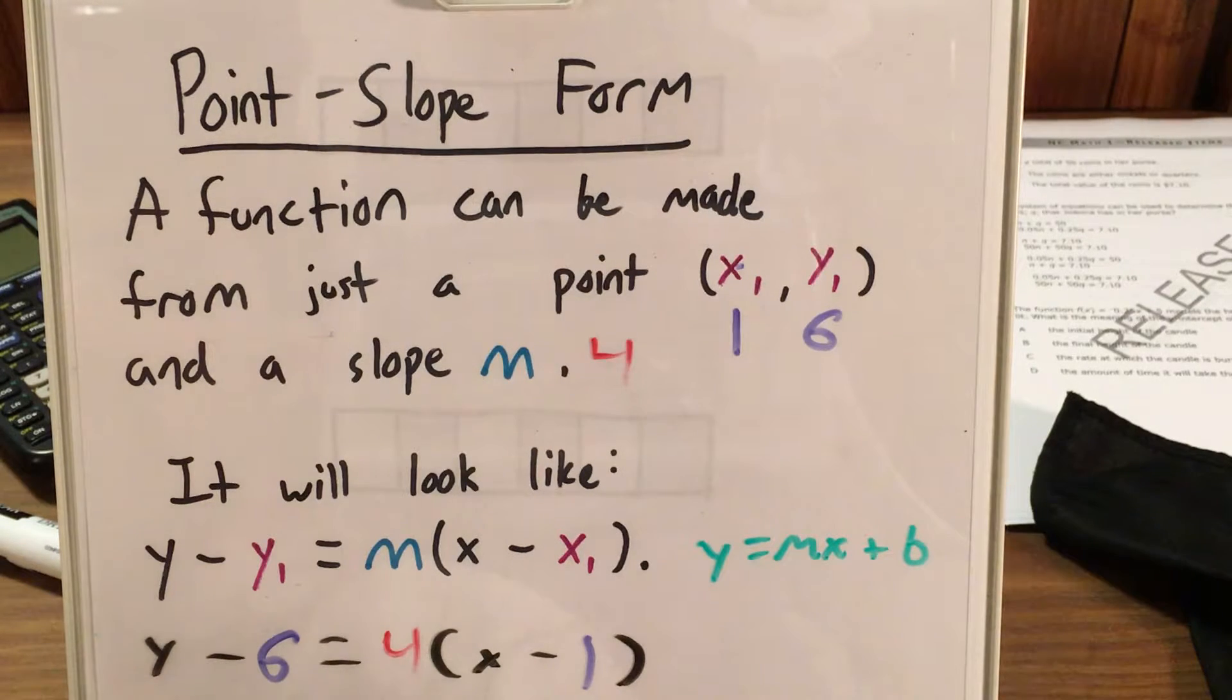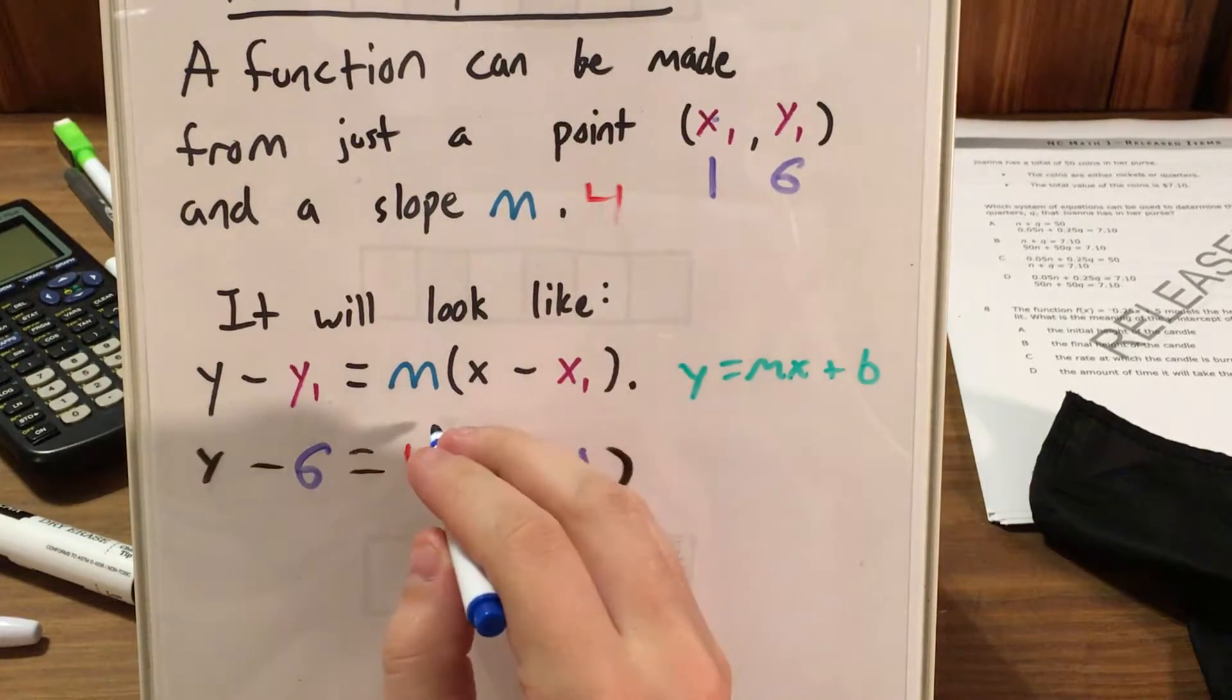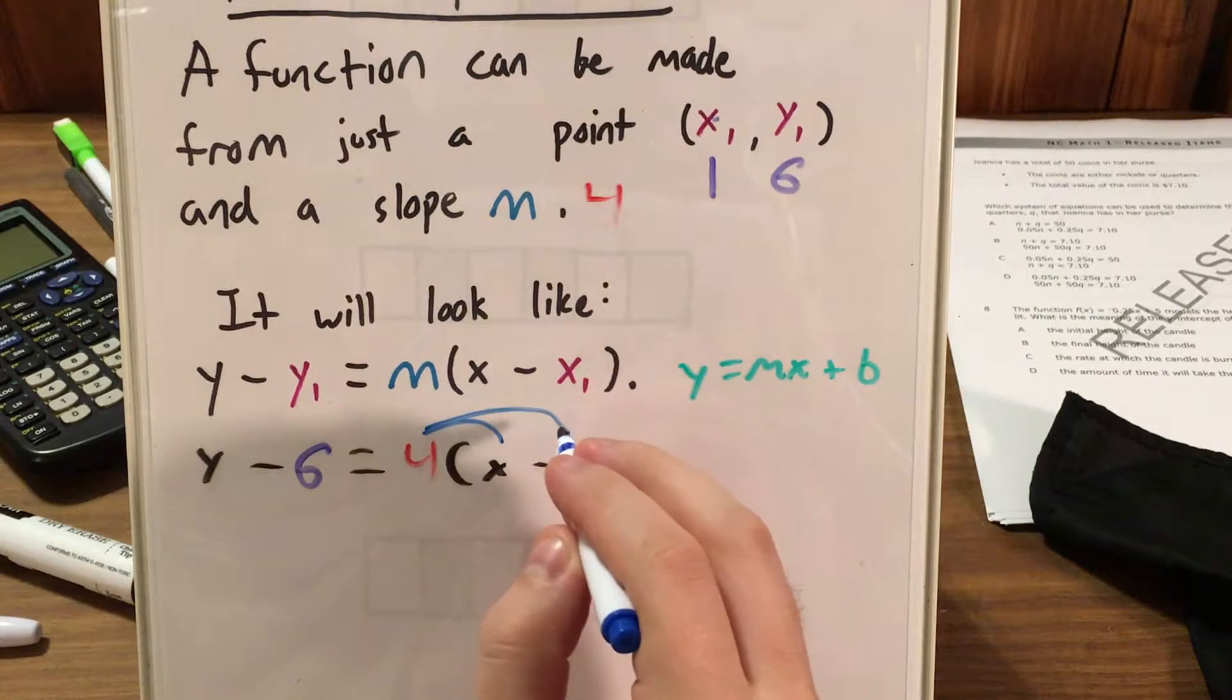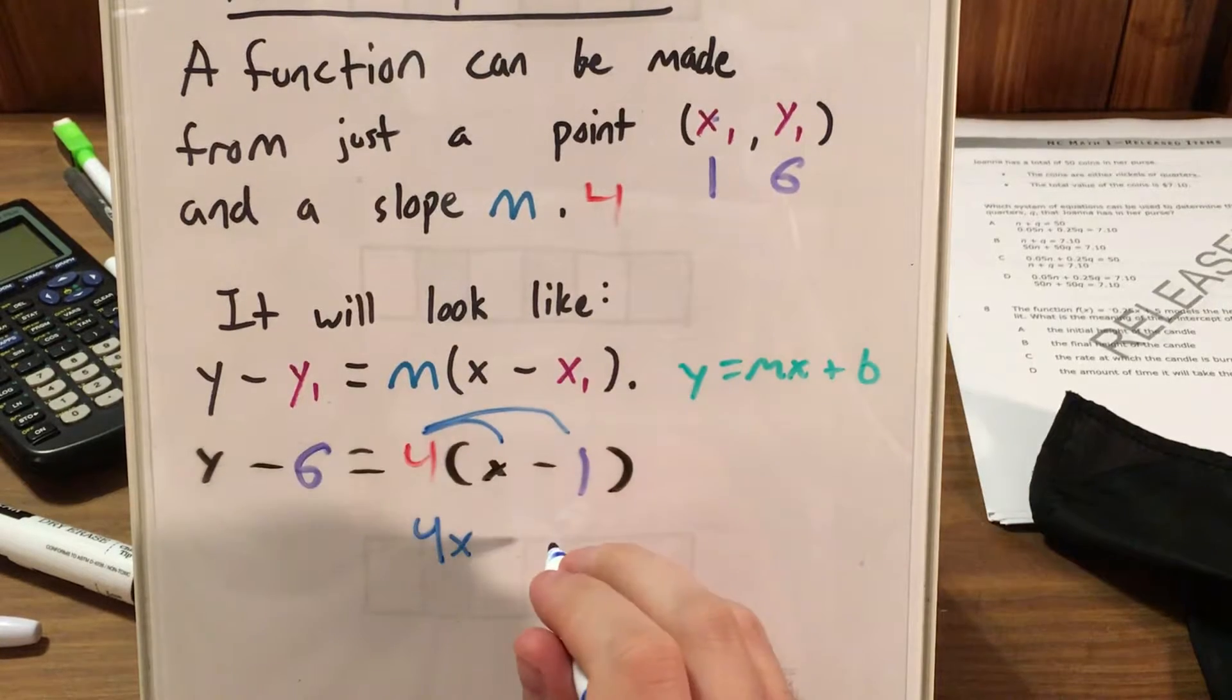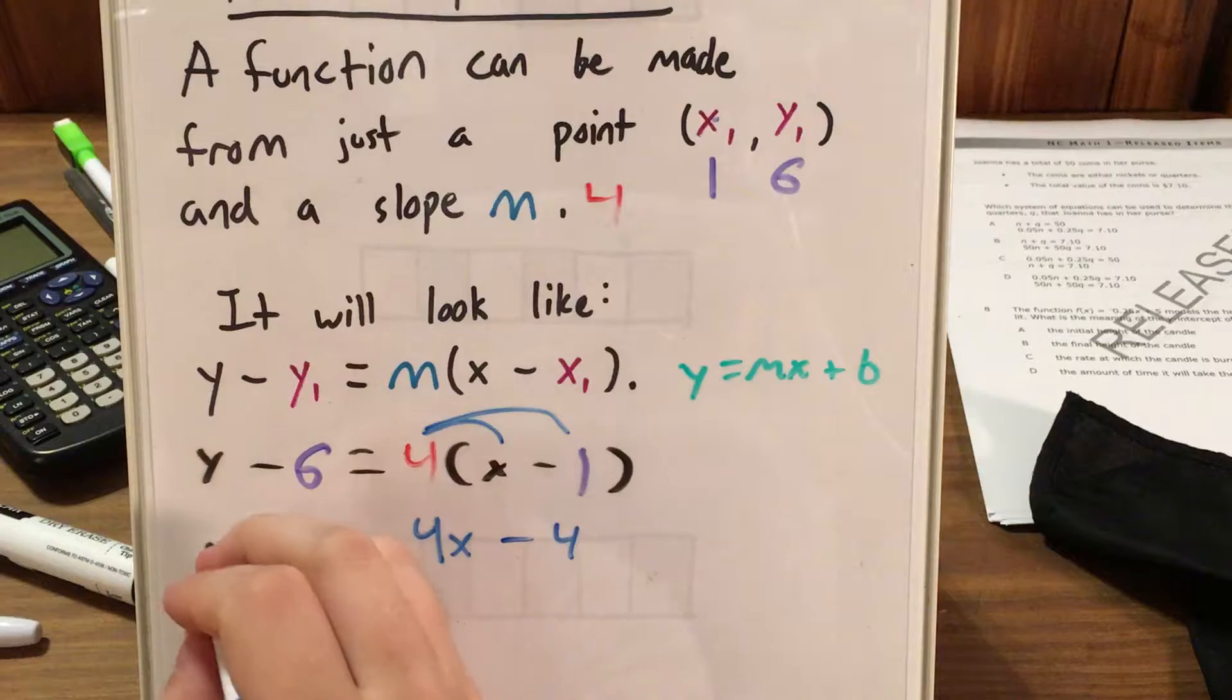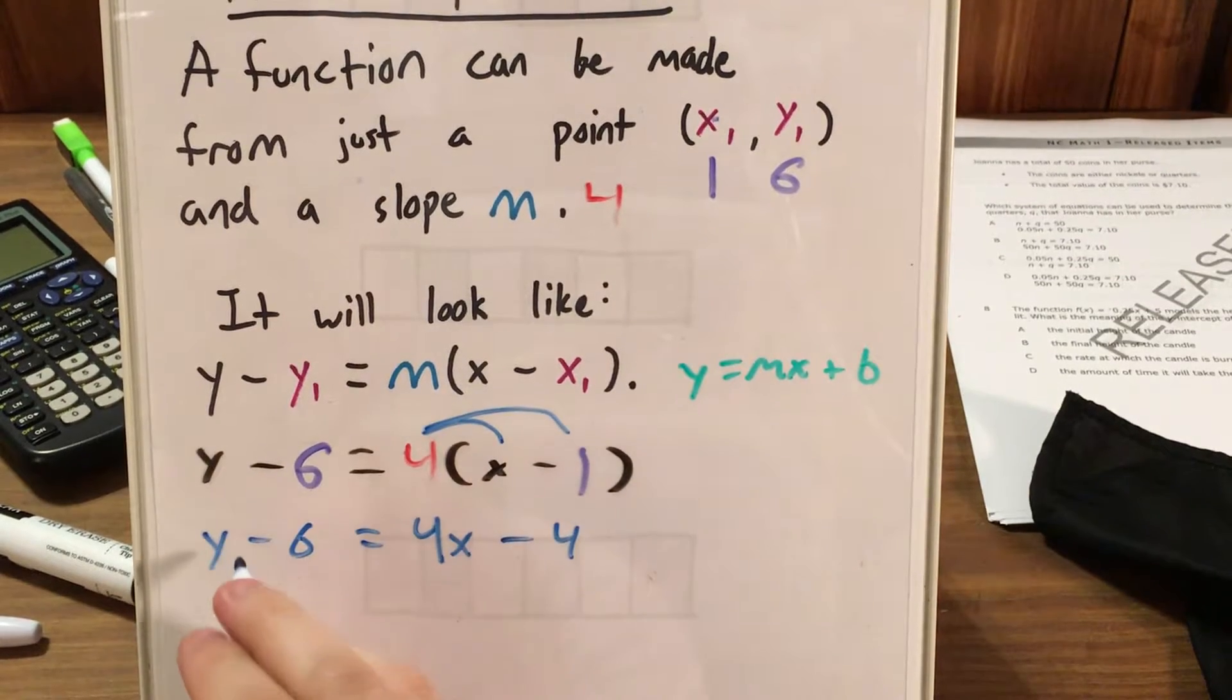Now, like I said, there's a couple of tricks that we'll have to use to get to something that looks like this. Let me scoot this up. First trick is that I'm going to use the distributive property here, just to knock out this parentheses. So 4 times x becomes 4x. 4 times 1 equals 4. I keep my subtraction sign in between those. So now I have that y minus 6 equals 4x minus 4.